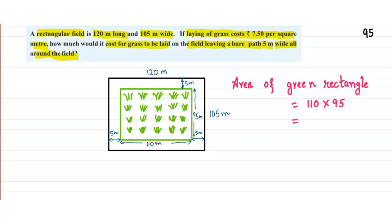95 by 11, it's very simple to multiply. We get 1045. So the area is 10450 meter square.